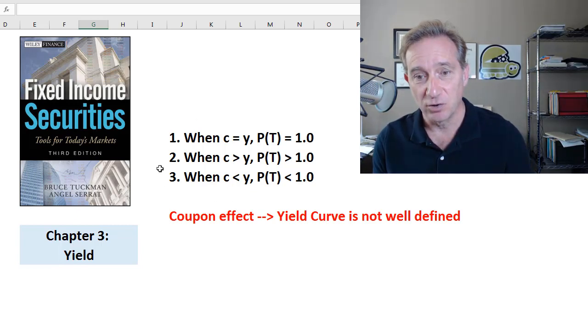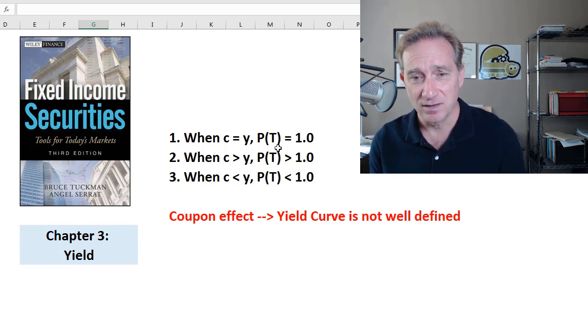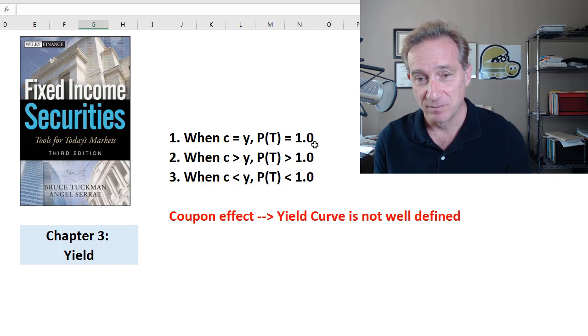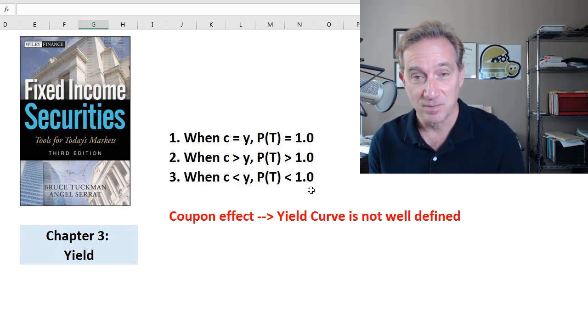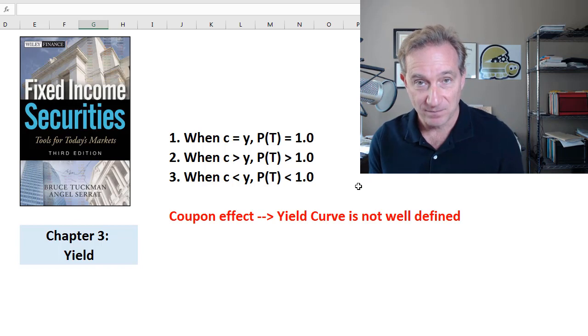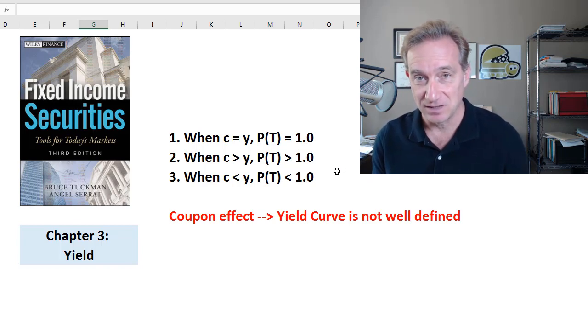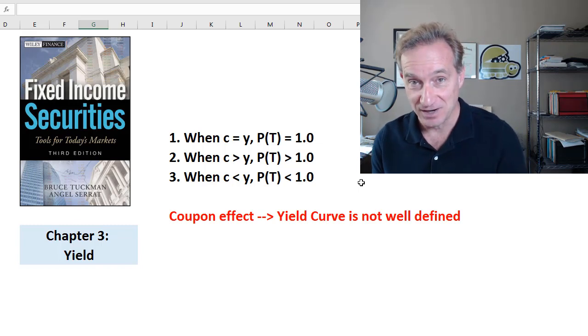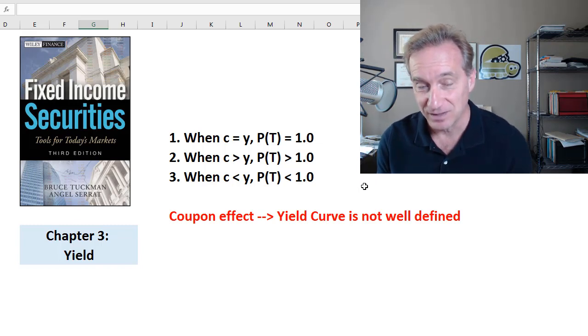First, the pull-to-par set of implications, which says that when the coupon rate equals the yield, the bond price is at par. If the coupon is greater than the yield, the bond price is at a premium, and when the coupon is less than the yield, the bond price is at a discount. Then the bonds, as they mature, will pull-to-par, but we will emphasize the key assumption in that pull-to-par. The key assumption is that the yield does not change over time. That's an unrealistic assumption.